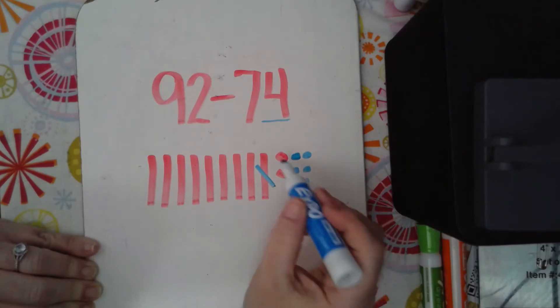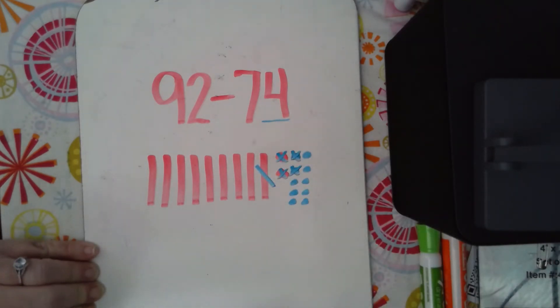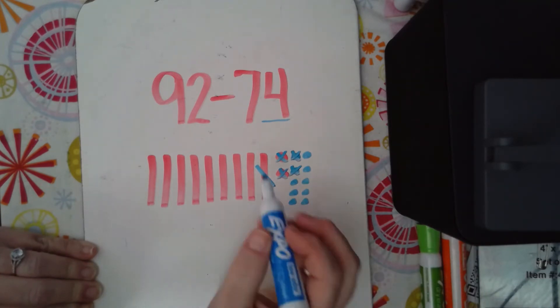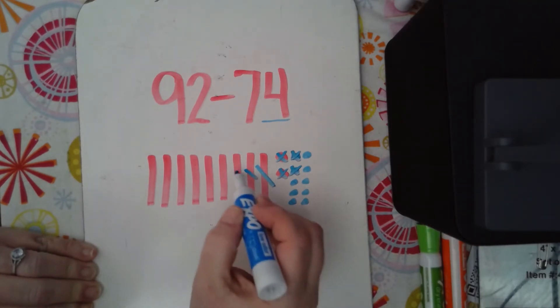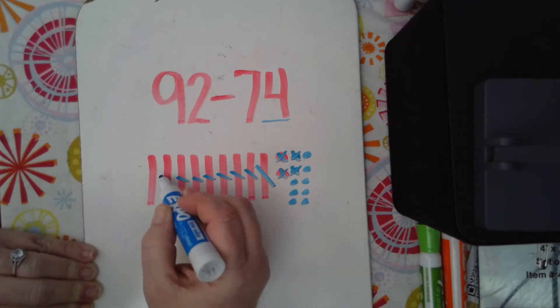So I'm just going to take away here 1, 2, 3, 4. So I've taken away the 4 ones and now I'm going to take away the 7 tens. This one doesn't count, remember because we didn't take it away, we regrouped it. So I'm going to take away 1, 2, 3, 4, 5, 6, 7.